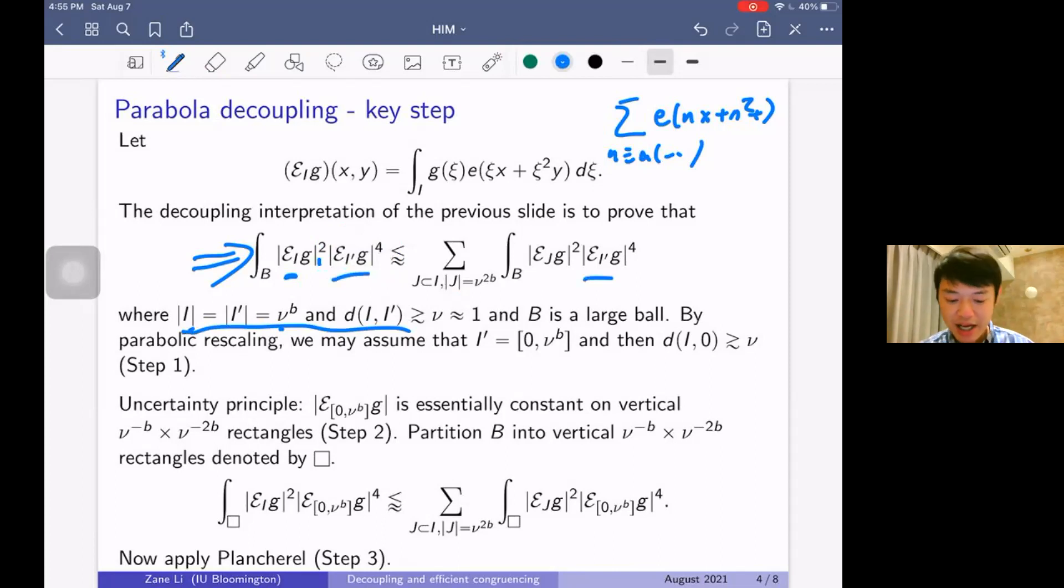And B is some large ball that we won't deal with in this slide. So what was the first step? The first step was that in these four variables, we shifted η to be 0 mod p^b. So once again, by parabolic rescaling, we may assume that I' is at the origin. I' is an interval of length ν^b, as is this interval, and the other two variables I is a large distance away from the origin.